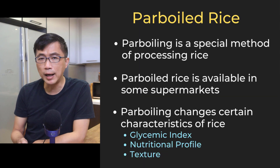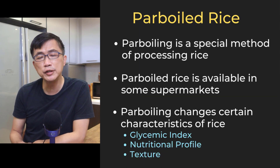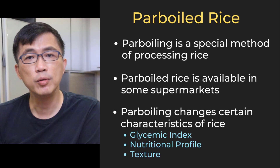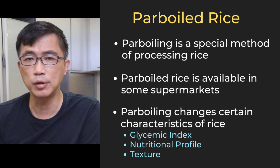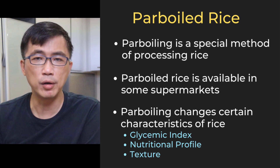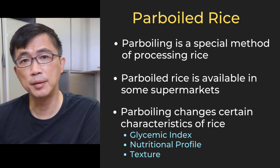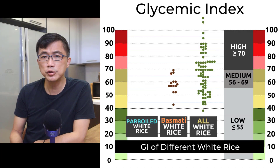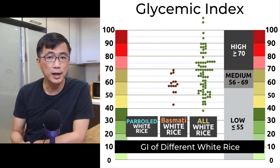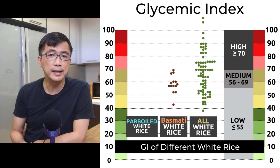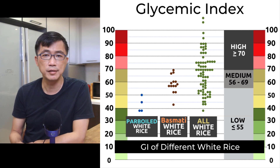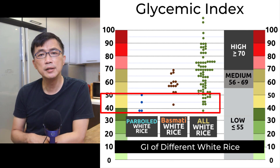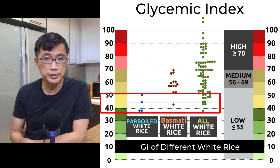Next, let's look at parboiled white rice as compared to conventionally processed white rice. Parboiled rice is also called converted rice. But for this video I shall not go into the details of parboiled rice — I think the topic is so interesting, there's so much to talk about, I shall do a separate video just on parboiled rice. Let's look at the range of GI values of parboiled white rice. In the database I found four records on parboiled white rice with GI values in the 30s to 40s range, which is generally lower than conventionally processed white rice.